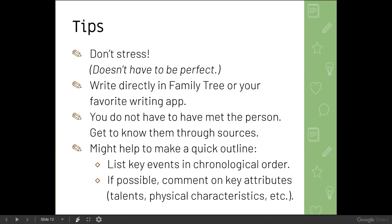It can be helpful to make a quick outline before you start writing. One way is to list key events in chronological order: birth, christening, marriage, death. That provides a framework. If possible, it's also nice to comment on key attributes. For example, military registrations often include physical descriptions, so you can note someone had blue eyes or was five foot seven, or had a 'ruddy complexion' — language we don't use much anymore, but it gives you an idea of what the person looked like. Census records might reveal an unusual occupation. Adding those details beyond just dates and places brings interest to the sketch.